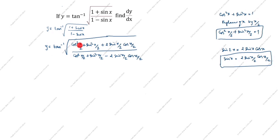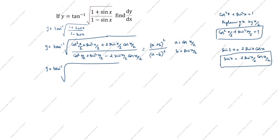The numerator is a squared plus b squared plus 2ab, and the denominator is a squared plus b squared minus 2ab. The formula gives us: numerator is (a plus b) whole squared, denominator is (a minus b) whole squared. Here a is equal to cos(x/2) and b is equal to sin(x/2). So y is equal to tan inverse of (cos(x/2) plus sin(x/2)) whole squared divided by (cos(x/2) minus sin(x/2)) whole squared.